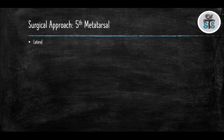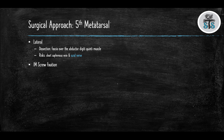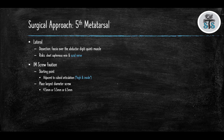When fixing these fractures surgically, an incision is made laterally, proximal to the styloid process of the 5th metatarsal. Dissection is over the fascia of the abductor digiti quinti muscle; the short saphenous vein and sural nerve are at risk. When using an intramedullary screw, place the screw high and inside, adjacent to the cuboid articulation. Use the largest diameter screw — at least greater than 4.5 mm — and use a solid, partially threaded screw, ensuring all threads cross the fracture site.